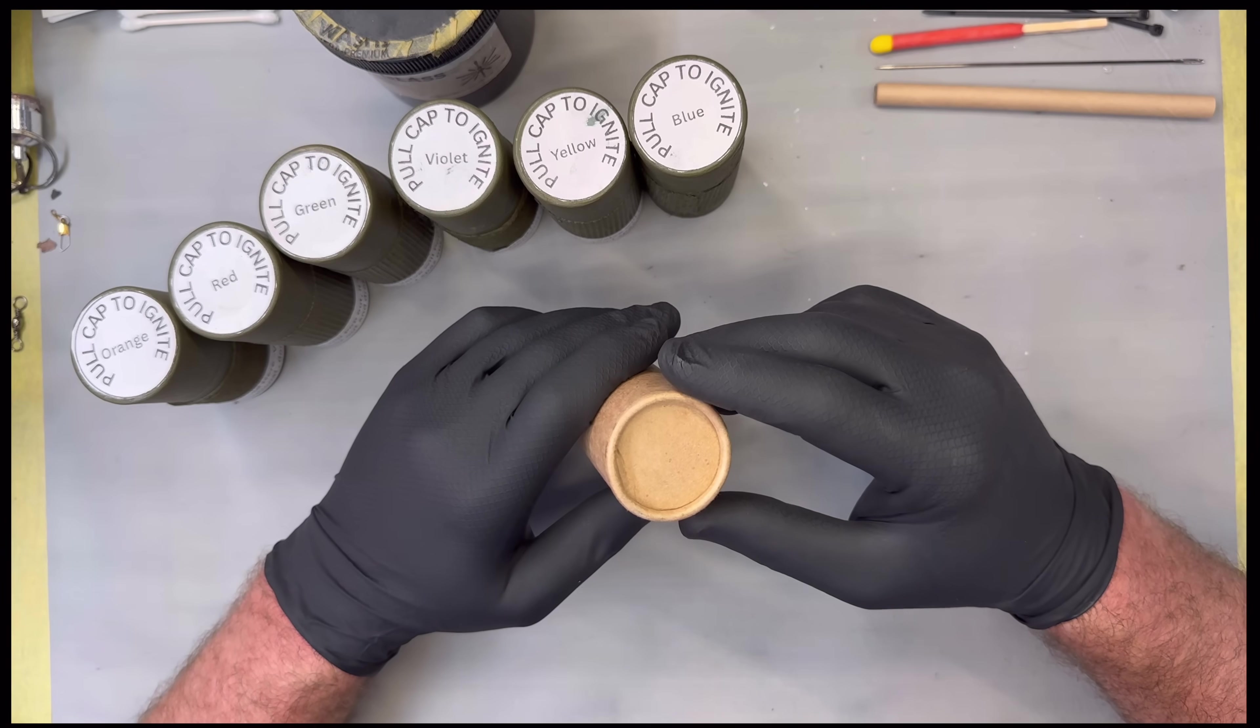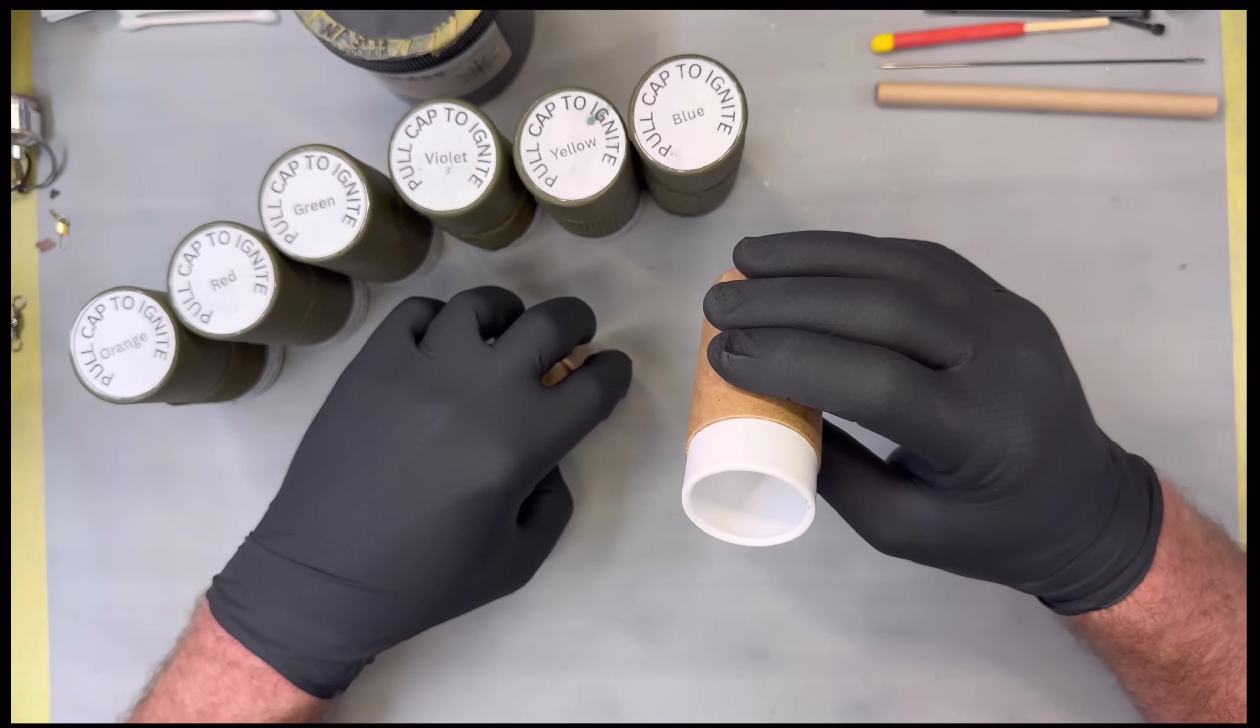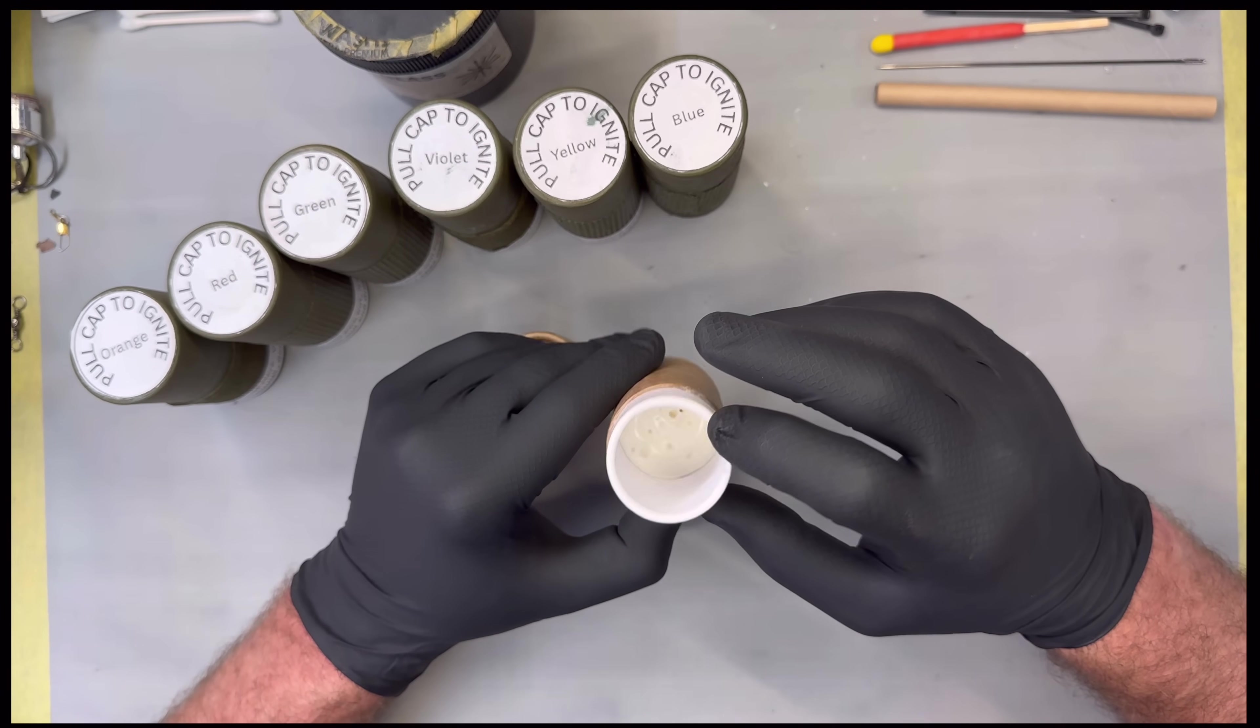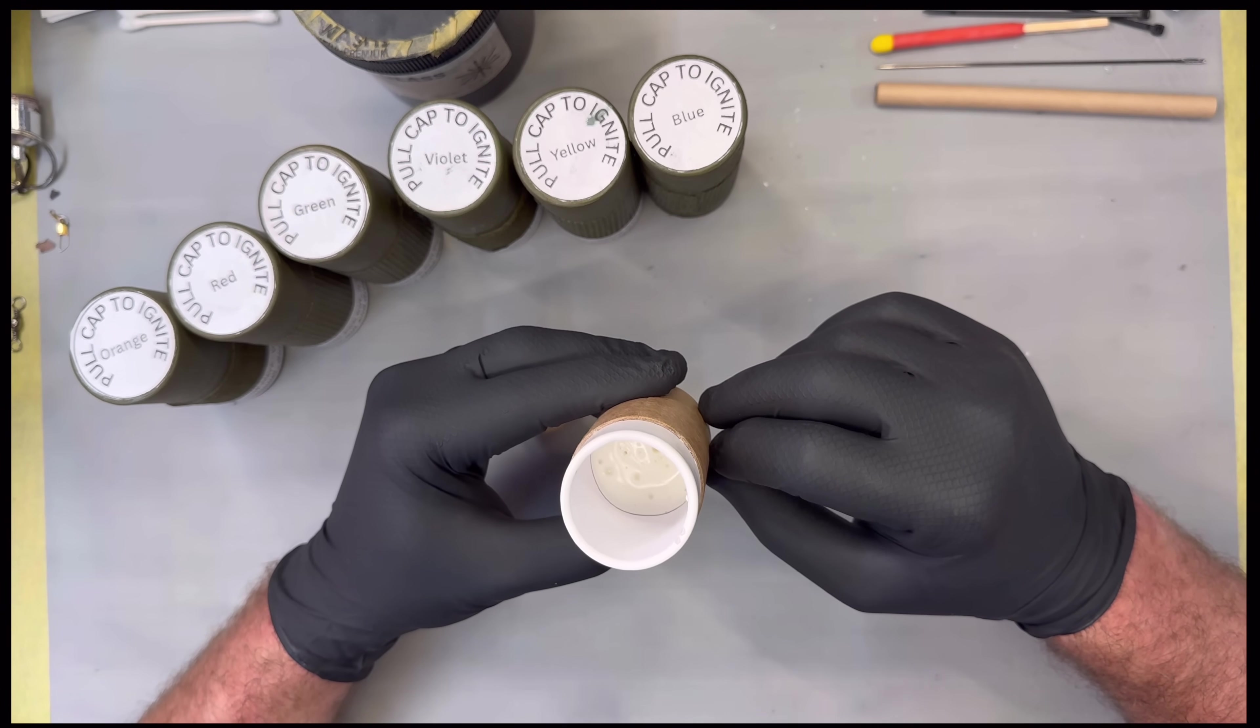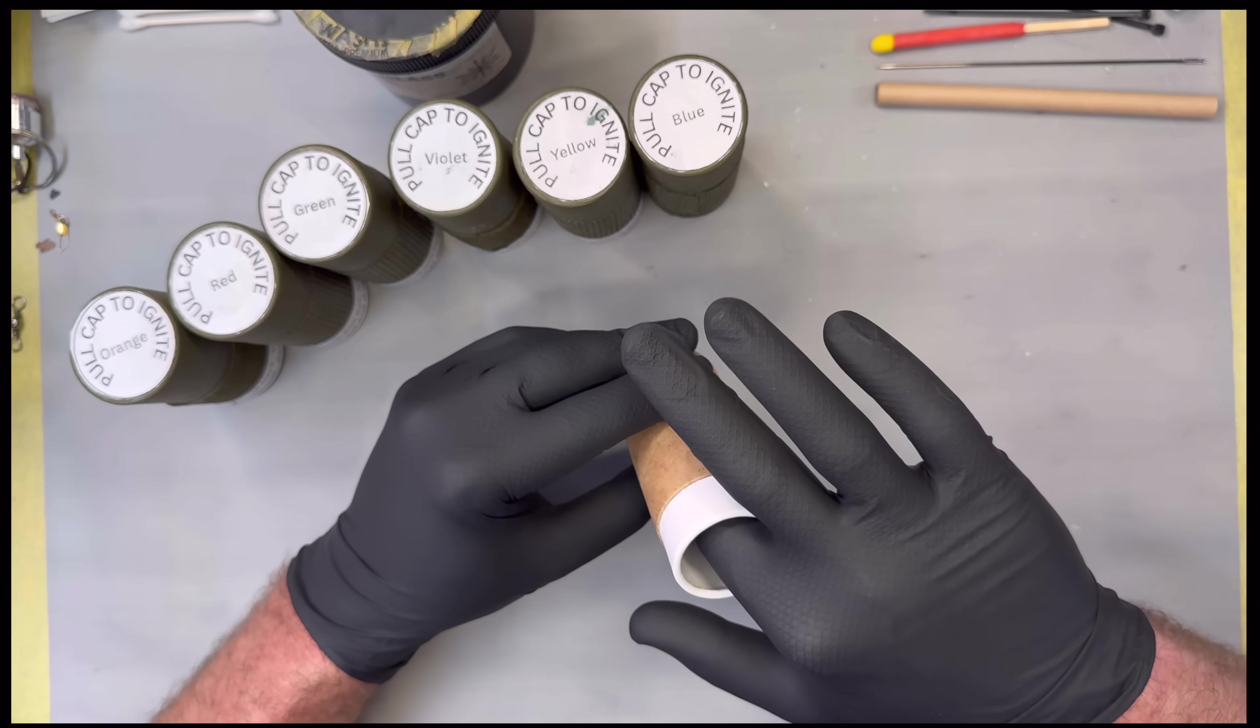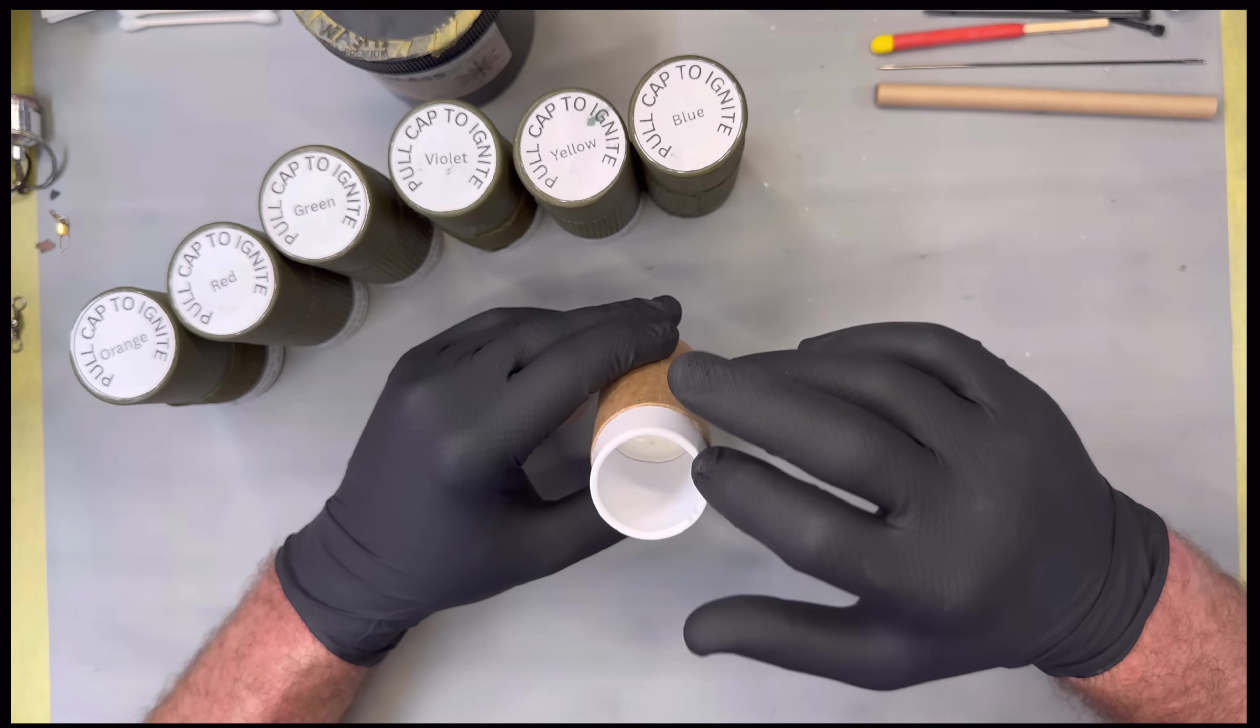I'll start with these tubes. Inside I have already added approximately three-quarters of an inch to one inch of either plaster of Paris, or in my case I prefer a two-part epoxy with glass microspheres, which is just a very common filler.